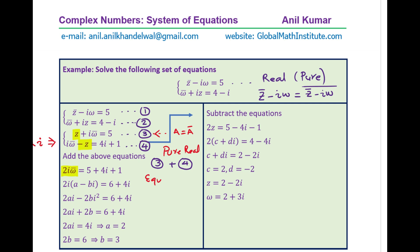Equating real and imaginary parts: expanding 2i·(a minus bi) gives 2ai minus 2bi-squared, and since i-squared is minus one, this becomes 2ai plus 2b equals 6 plus 4i. Equating imaginary parts: 2a equals 4, so a equals 2. Equating real parts: 2b equals 6, so b equals 3. Therefore omega equals 2 plus 3i.